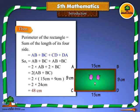Then, perimeter of the rectangle is equal to sum of the length of its four sides. Equals AB plus BC plus CD plus DA. So equals AB plus BC plus AB plus BC, equals 2 into AB plus 2 into BC. After solving this, we get 48 cm.